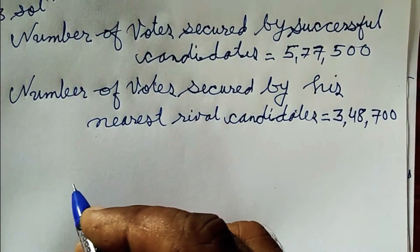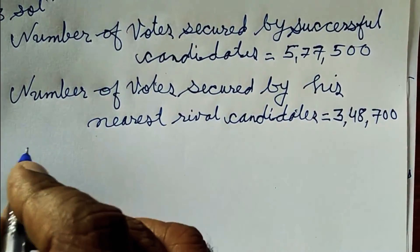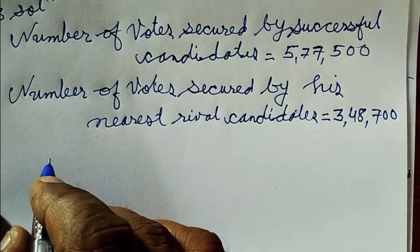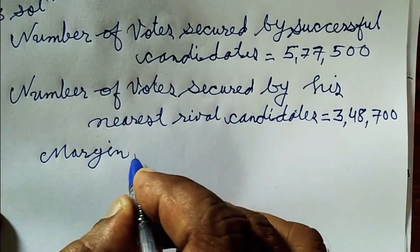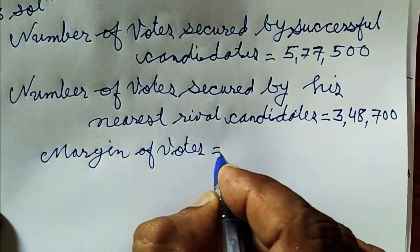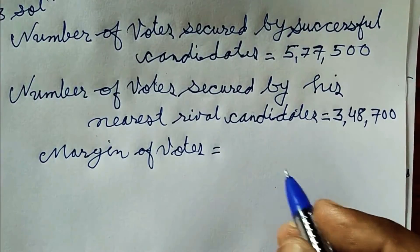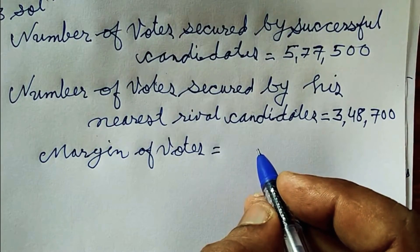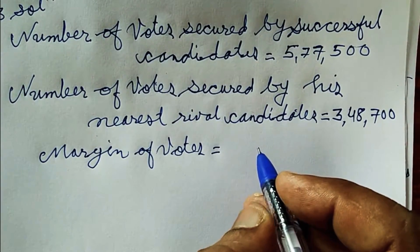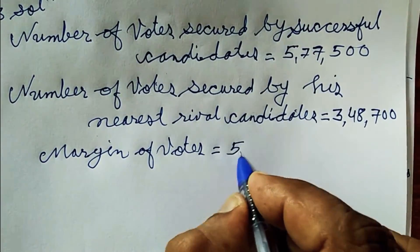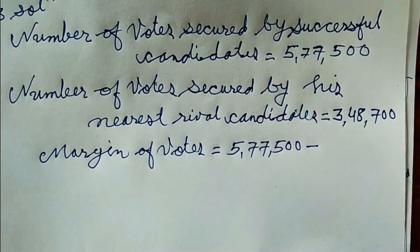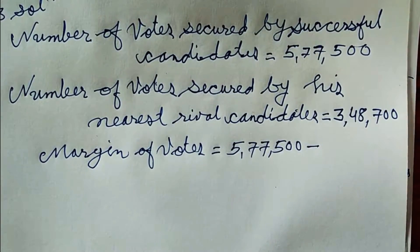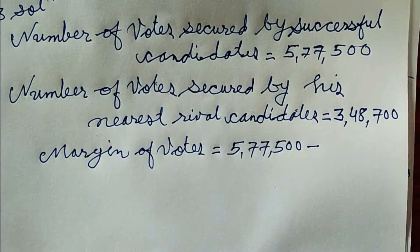Margin of votes: we will write 5,77,500 minus 3,48,700.